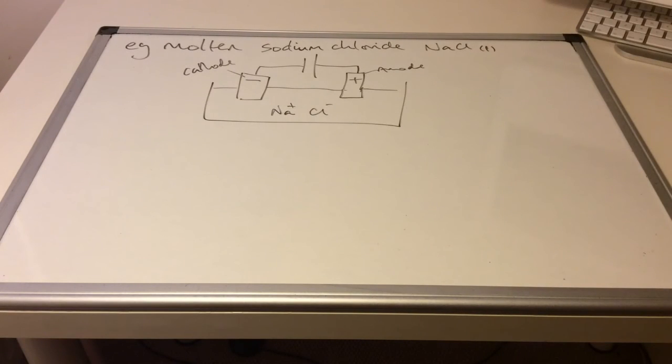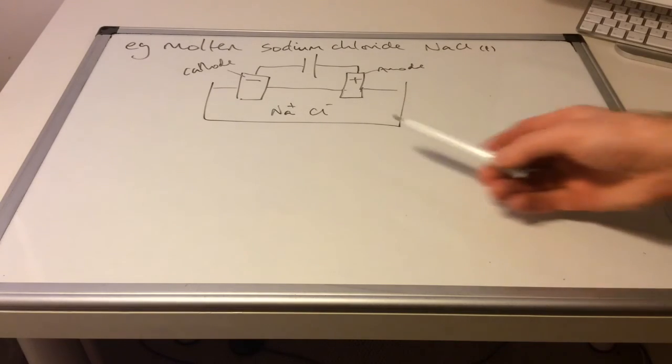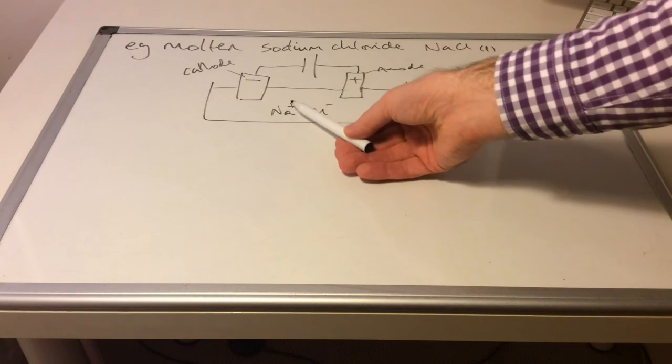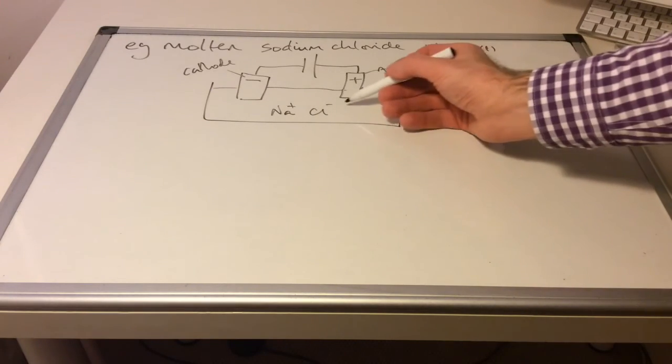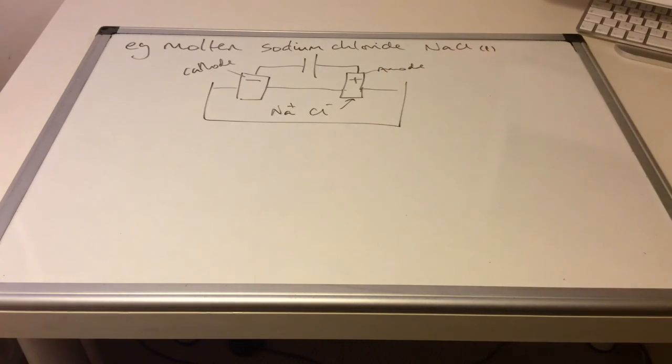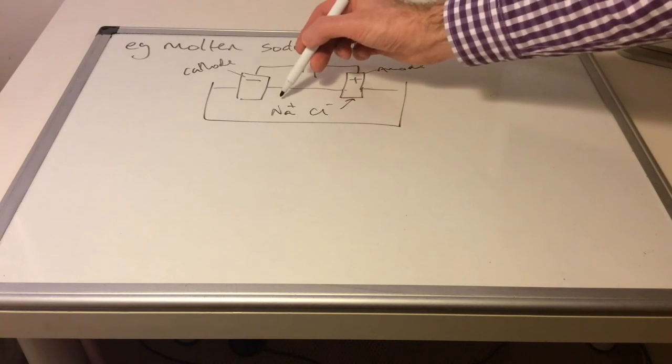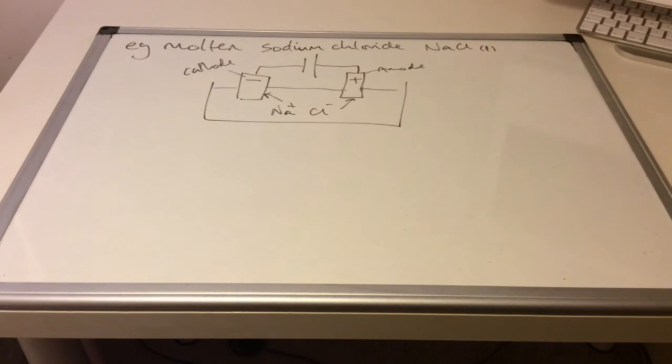So first of all, we need to start by thinking about which ions are present in molten sodium chloride. So we've got a sodium ion Na plus. And a chloride ion Cl minus. And so the chloride ion would be attracted to the anode. And the sodium ion would be attracted to the cathode.